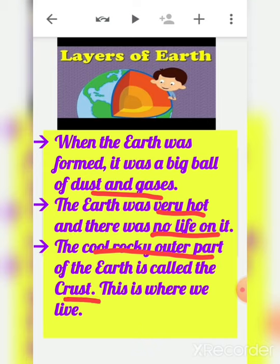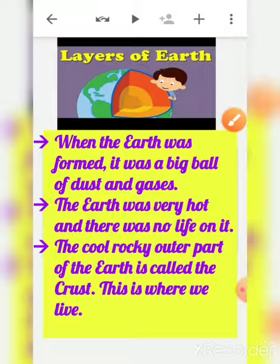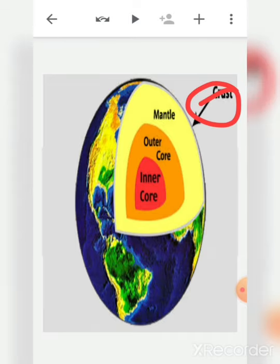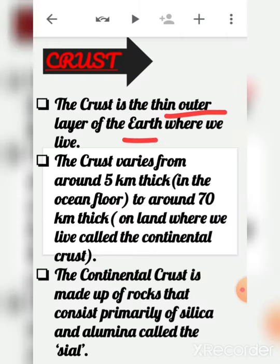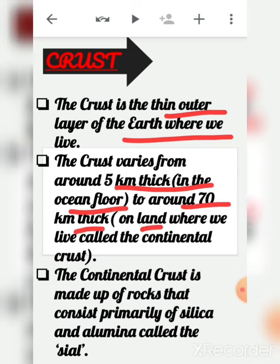The cool rocky outer part of the earth is called the crust. This is where we live — in the outer part, not inside the earth. The crust is the thin outer layer of the earth and it varies from around 5 kilometres thick on the ocean floor to around 70 kilometres thick on land, called the continental crust.